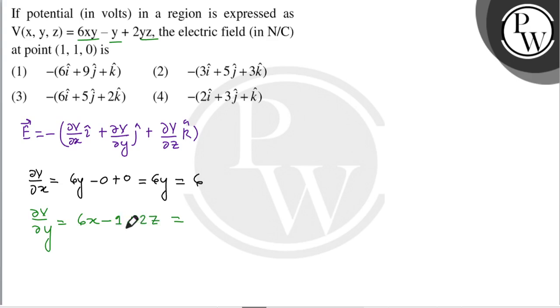Ab x ki aur z ki value substitute karenge, to x ki value hai 1, to yeh ho jayega 6 minus 1 plus z ki value hai 0, to yeh ho jayega 0 which is equal to 5.